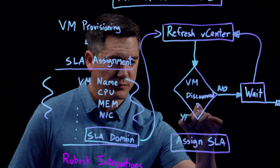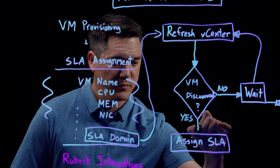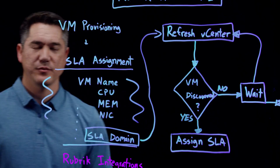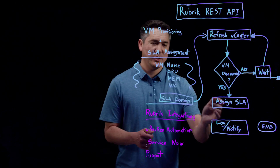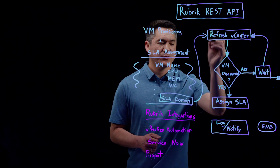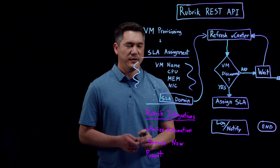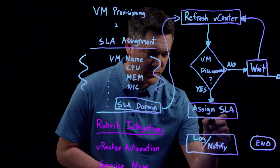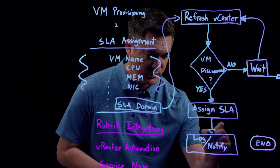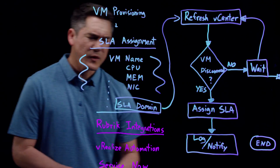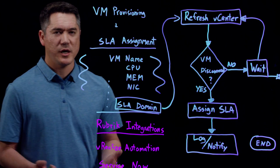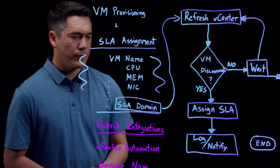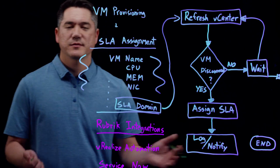If yes, we will then move the workflow on to the SLA domain assignment. This will be a REST API call back up to Rubrik to assign the specified SLA that was chosen in the form. Once this is done, we'll pass it down to some optional workflow components. As a post process, we can either log or notify the user that this has been accomplished.